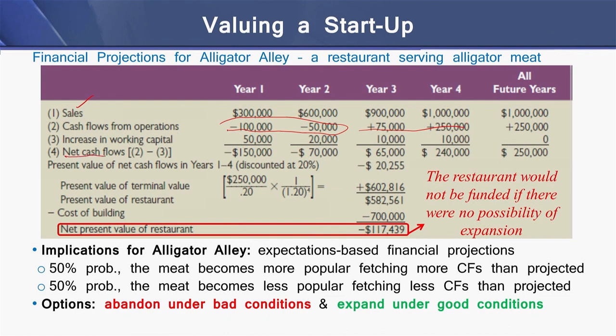Looking at the net cash flows from year one to year four, we see negative net cash flows during the earlier two years, whereas these cash flows are positive starting from year three. From the present value of the terminal value, we can calculate the present value of this restaurant project, which is $582,561.